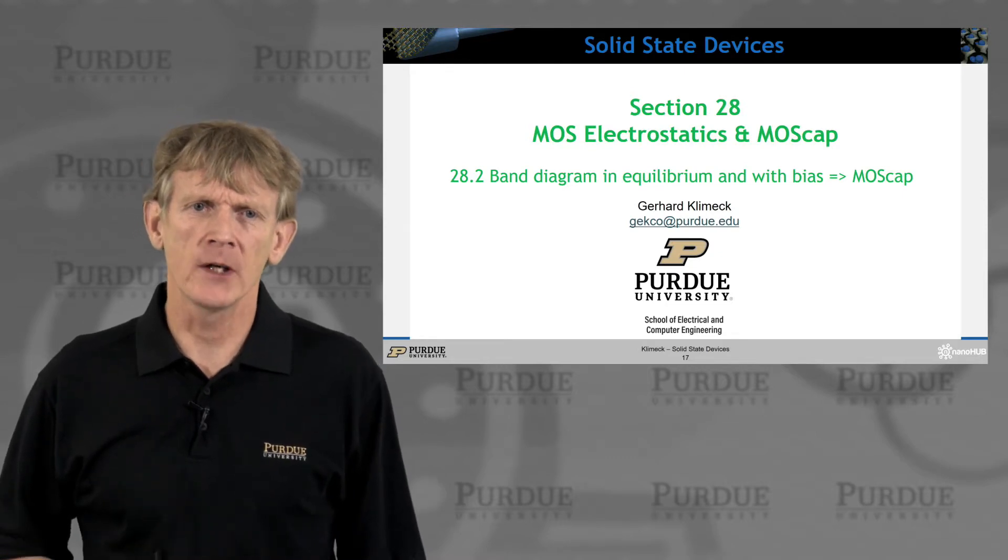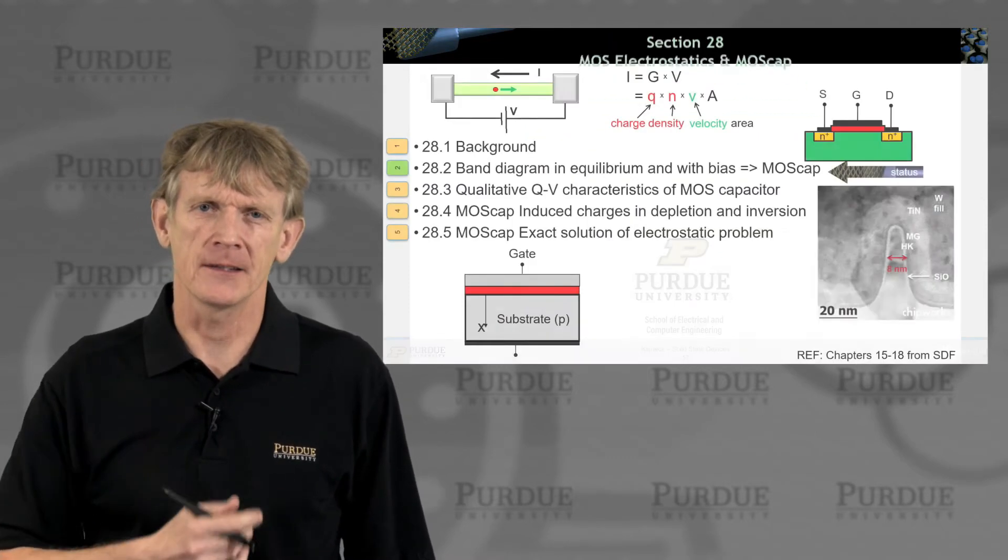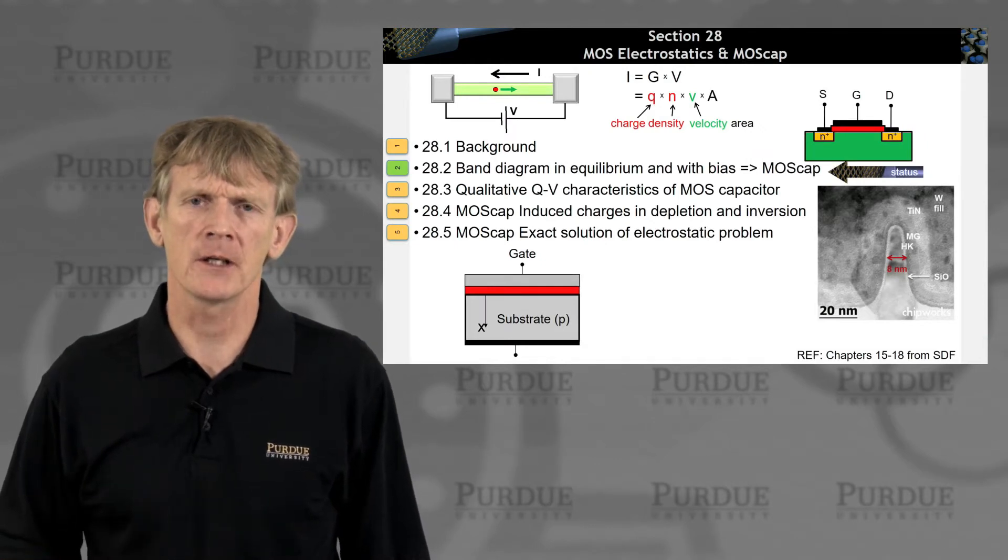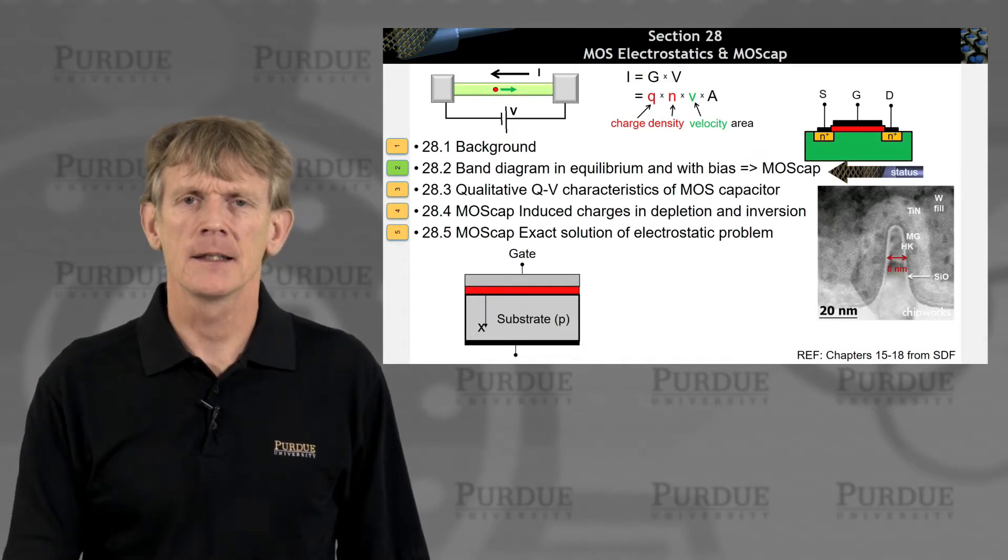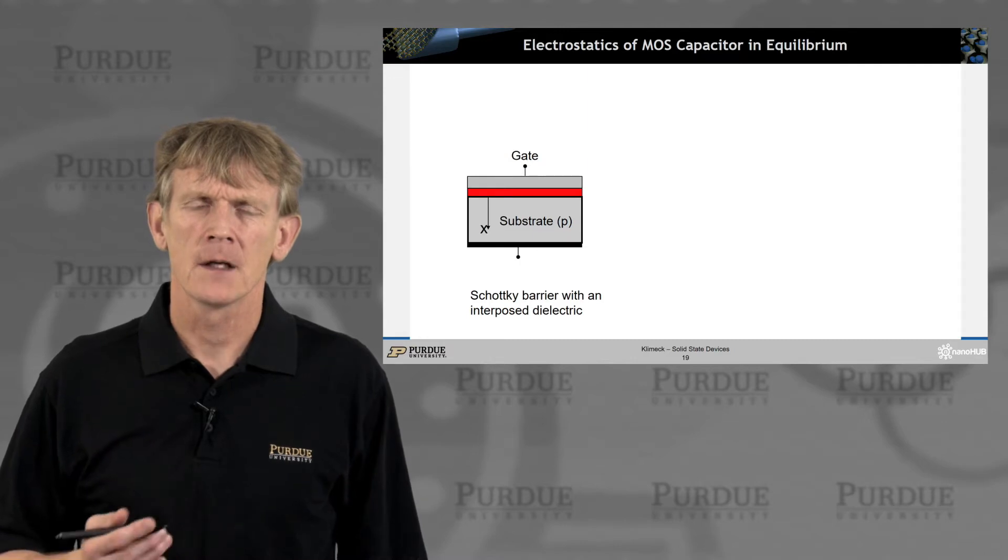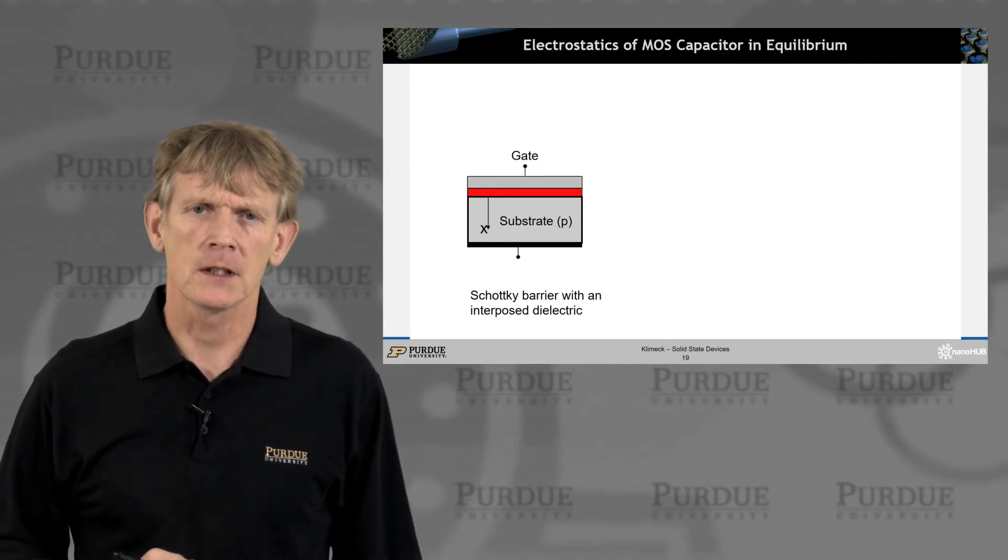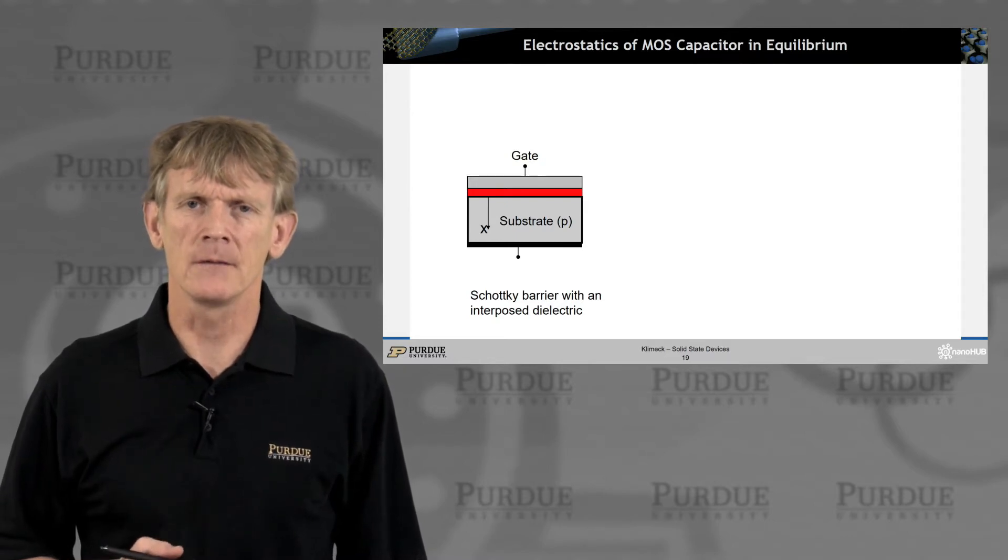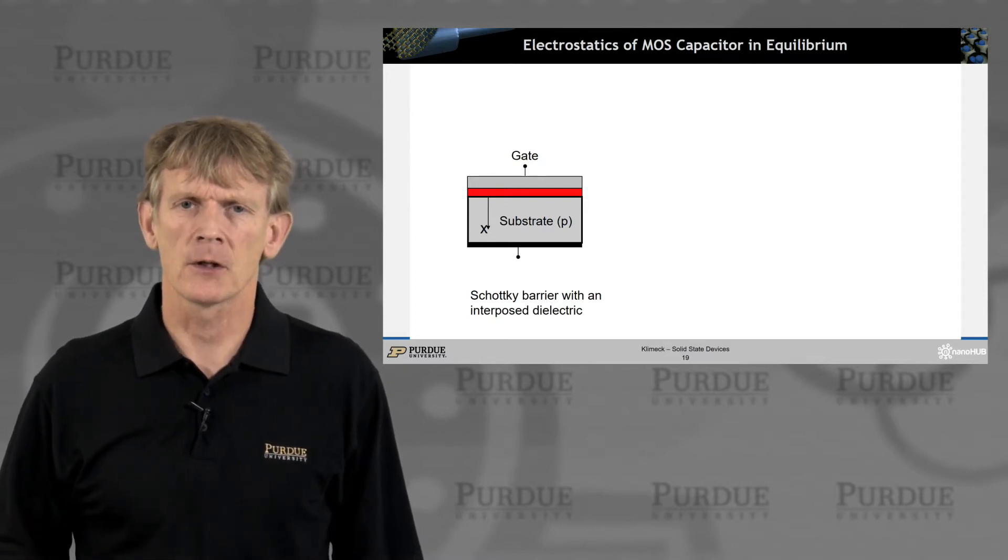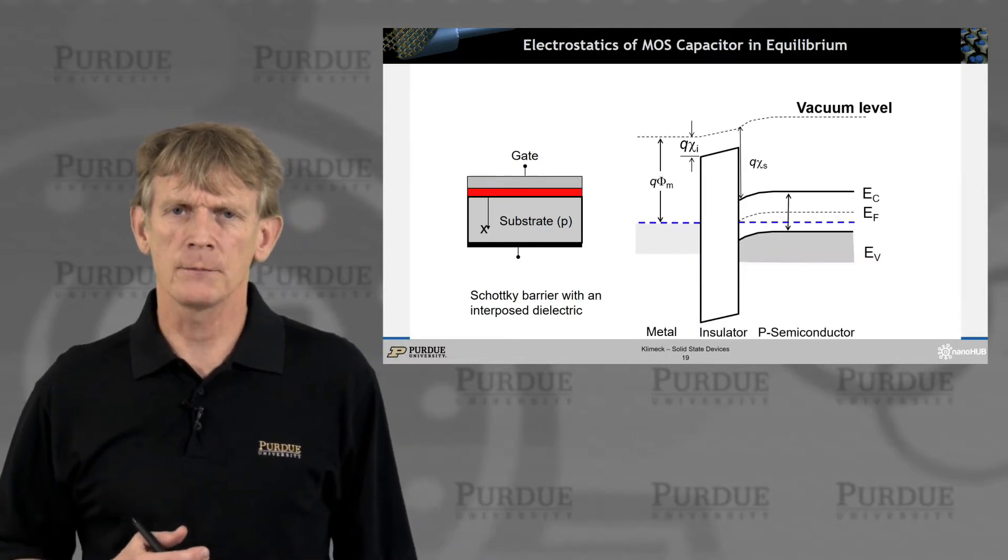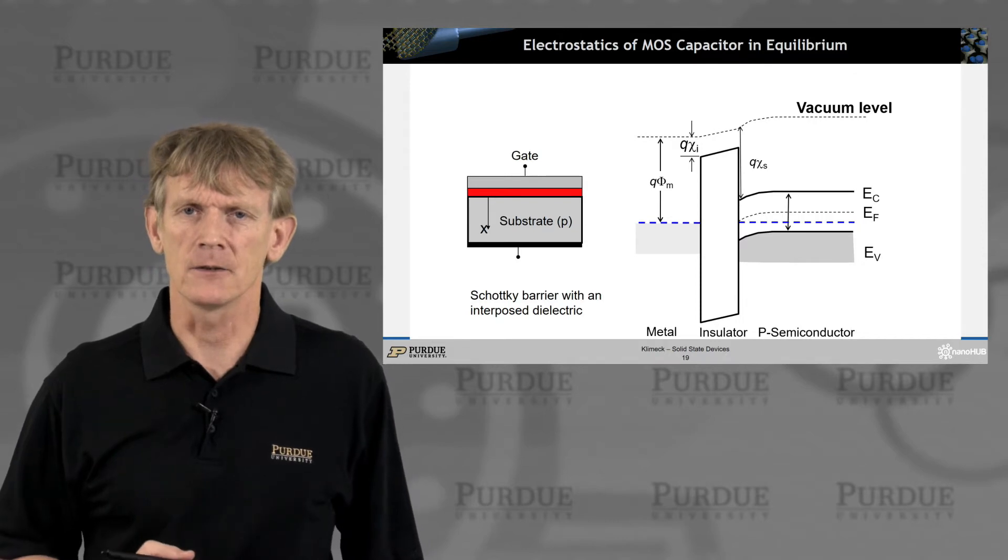Okay, let's look at some MOS electrostatics and the MOS capacitor. I just introduced a little bit about MOS devices, and let's look at this stack here. What you have here is a little bit like a Schottky diode that we have seen before, but you have an insulating layer in between. So, you have a metal oxide semiconductor, and it looks a bit similar to what we had before when we discussed the Schottky diode.